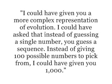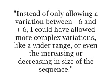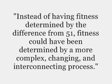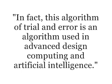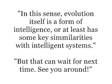I could have given you a more complex representation of evolution. Instead of guessing a single number, I could have asked you to guess a sequence. Instead of 100 possible numbers, I could have given you 1000. Instead of only allowing a variation between negative 6 and positive 6, I could have allowed more complex variations, like a wider range, or even the increasing or decreasing in size of the sequence. Fitness could have been determined by a more complex, changing, and interconnecting process. In fact, this algorithm of trial and error is used in advanced design computing and artificial intelligence. In this sense, evolution itself is a form of intelligence, or at least has some key similarities with intelligent systems.